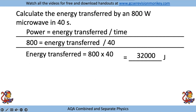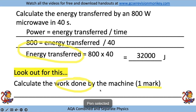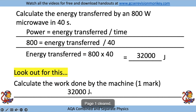Look out for this: if they ask you about energy transferred, look out for a one-mark question straight afterwards saying 'calculate the work done by the machine.' The clue is that it is just one mark. Energy transferred and work done are both measured in joules - they are the same thing - so all you need to do is write down 32,000 joules, the same answer as you previously worked out.